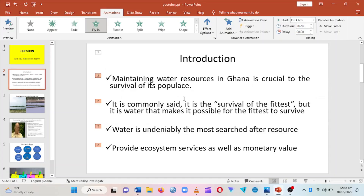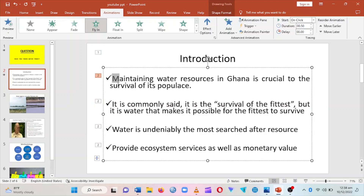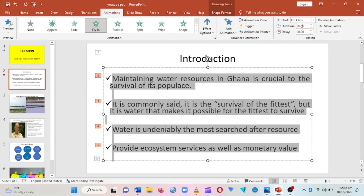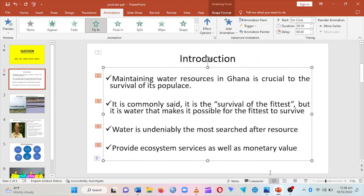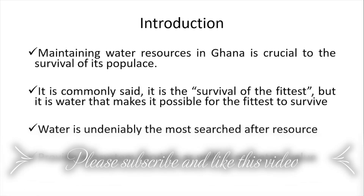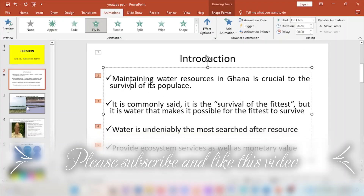We don't want that. So what you can do is highlight everything, then go to the top right corner here and click on the small arrow, and re-click on 'On Click'. Once you click on 'On Click', it numbers them in order — two, three, four, five — and they appear one by one for you.